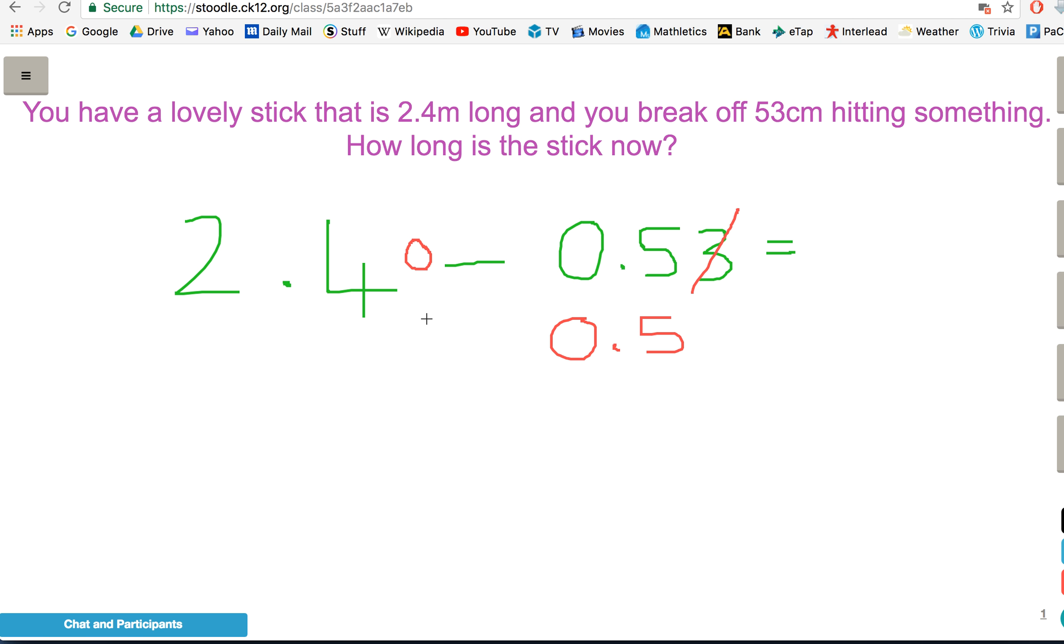Now, we can see we've actually got 40 hundredths. Four-tenths and no hundredths is 40 hundredths. And we've got to take away three of those hundredths.